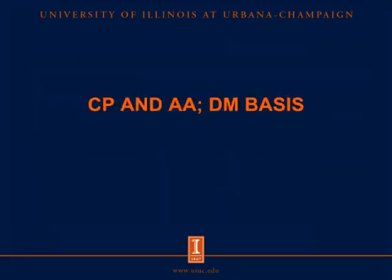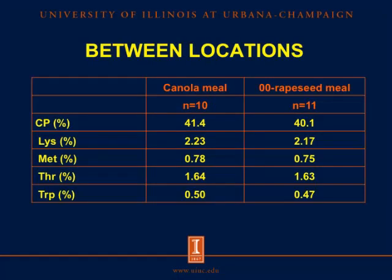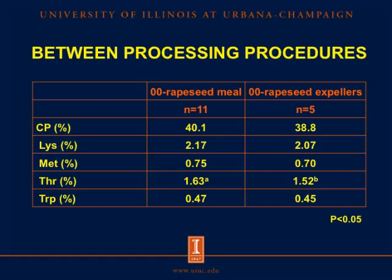Now let's talk about the concentration of crude protein and amino acids. For the meal from different locations, the concentration of crude protein, lysine, methionine, and tryptophan were not different between canola meal from North America and 00 rapeseed meal from Europe. For the meal from different oil extraction procedures, the concentration of threonine was greater in 00 rapeseed meal from solvent extraction, but crude protein, lysine, methionine, and tryptophan were not different.